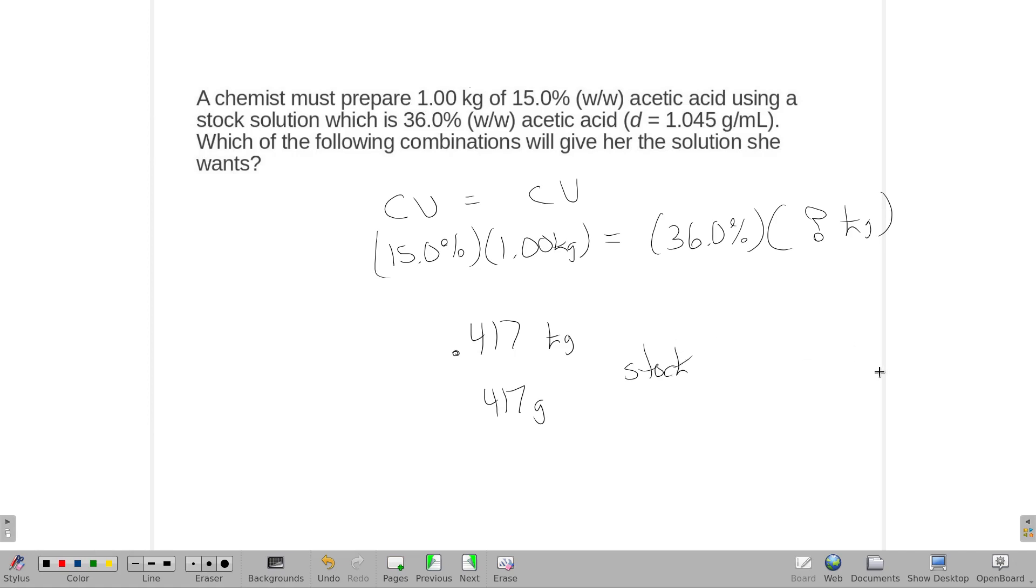And then we're going to get the total mass up to one kilogram, or it might say whatever one minus 417 is. So 0.583? So 583 grams of water added to that to bring it up to one kilogram.